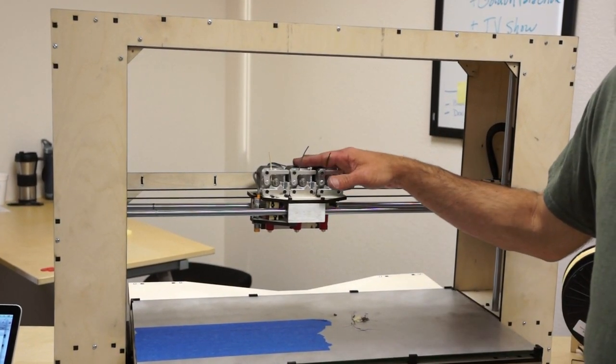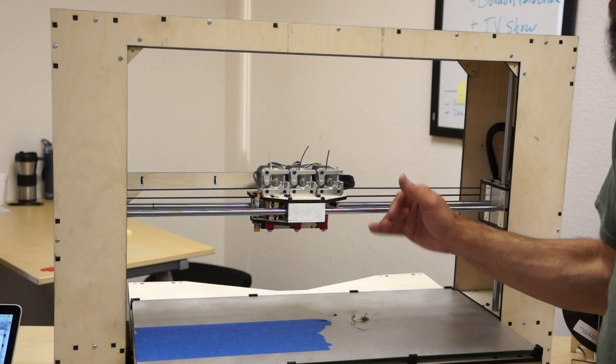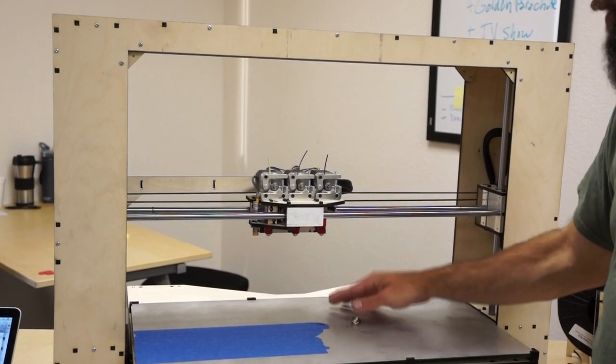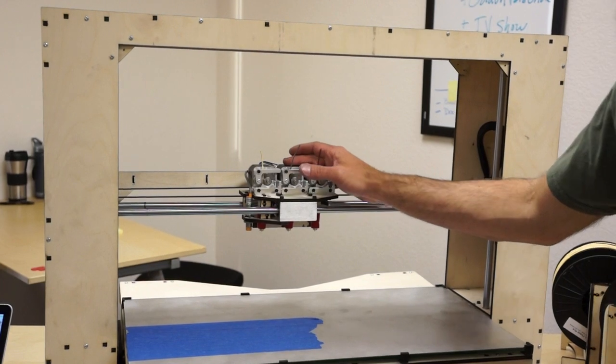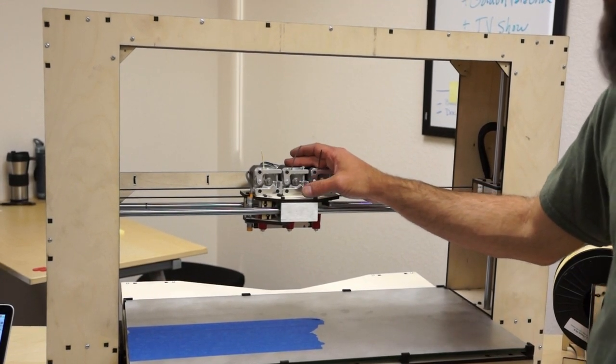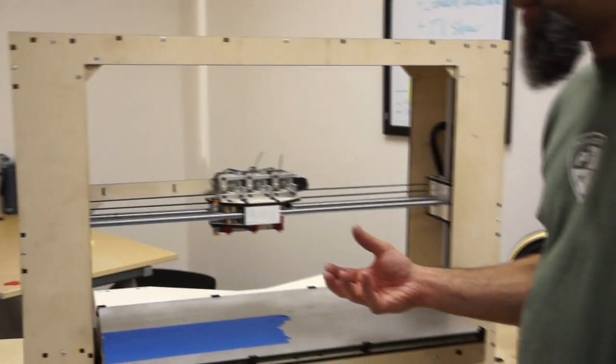So if you have these up to temp, definitely get some plastic in there. So we've now determined that we can connect to the bot. We can move the bot. We can control it through OctoPrint.